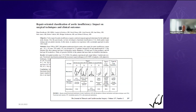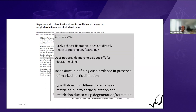There is a different classification of the aortic valve that I'm sure you're all familiar with and which is frequently quoted. I do not use it often because it has relevant limitations. Number one, it's purely echocardiographic and does not directly relate to morphology or pathology. It does not provide morphologic cutoffs for surgical decision-making. More importantly, it is insensitive in defining cusp prolapse in the presence of marked aortic dilatation — if the cusp is stretched and the root is dilated, prolapse may evade preoperative studies. Also, type 3 does not differentiate between restriction due to aortic dilatation and restriction due to cusp retraction.